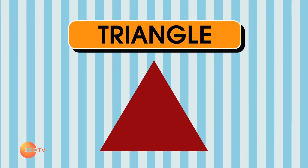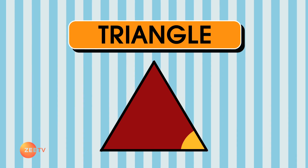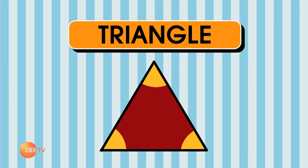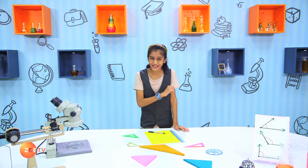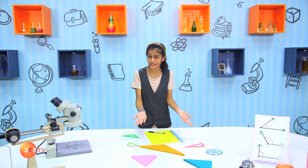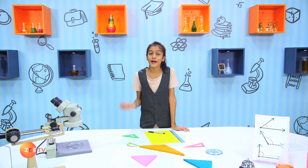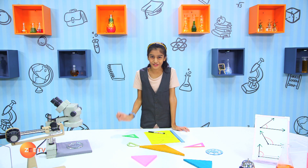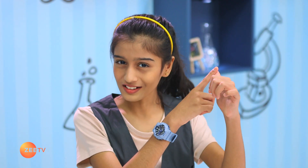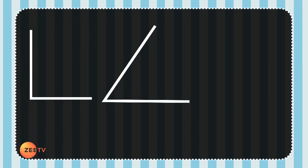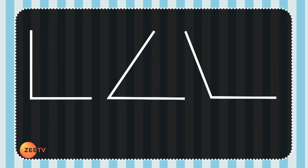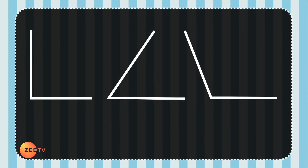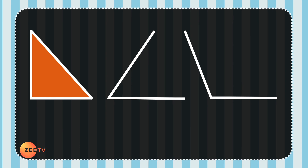Triangles always have three sides and three angles. Let's classify these triangles by three different types of angles: right angle, acute angle, and obtuse angle. Watch what happens when we use a third line in each of these angles to form closed shapes.